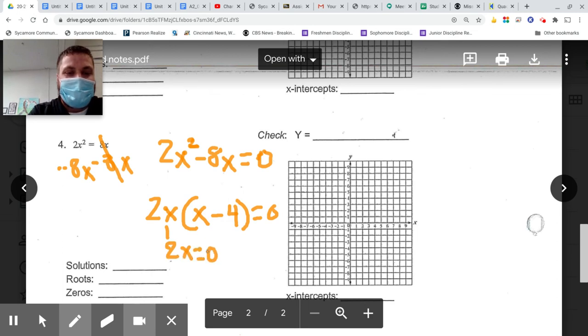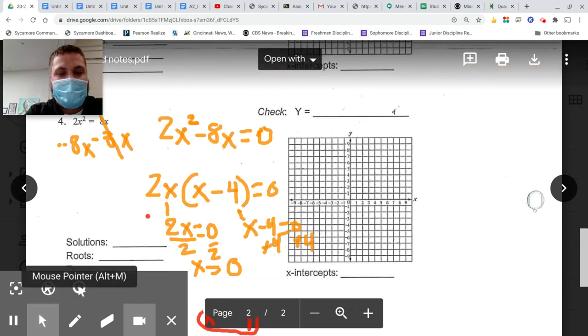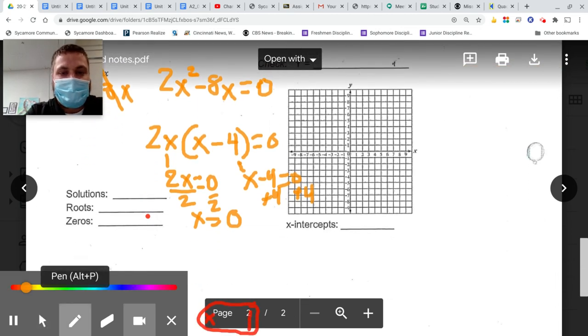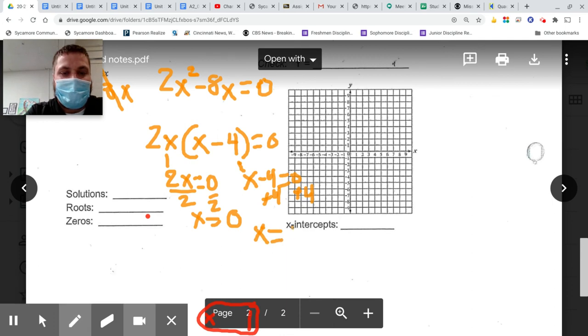Now I just set each of these factors, including the 2x, equal to zero. So when I put 2x equals zero, when I divide by 2, I get that x equals zero. That's my first solution or root or zero or x-intercept. I then set x minus 4 equal to zero, I add 4 to get that x equals 4 as my second answer.